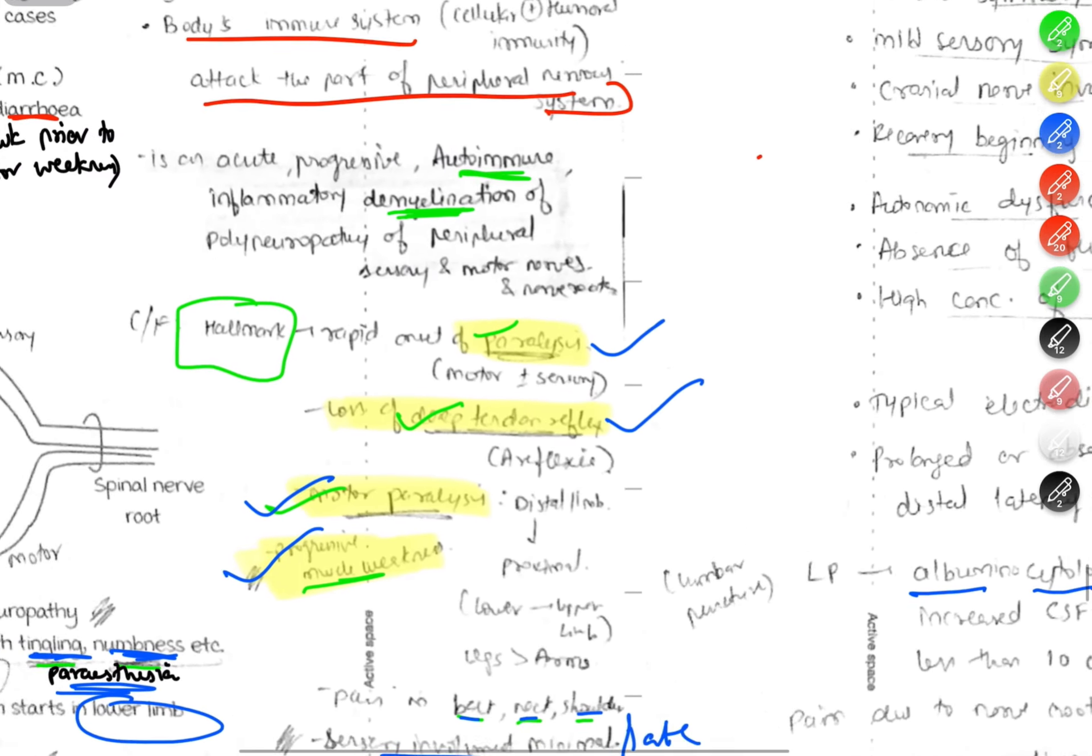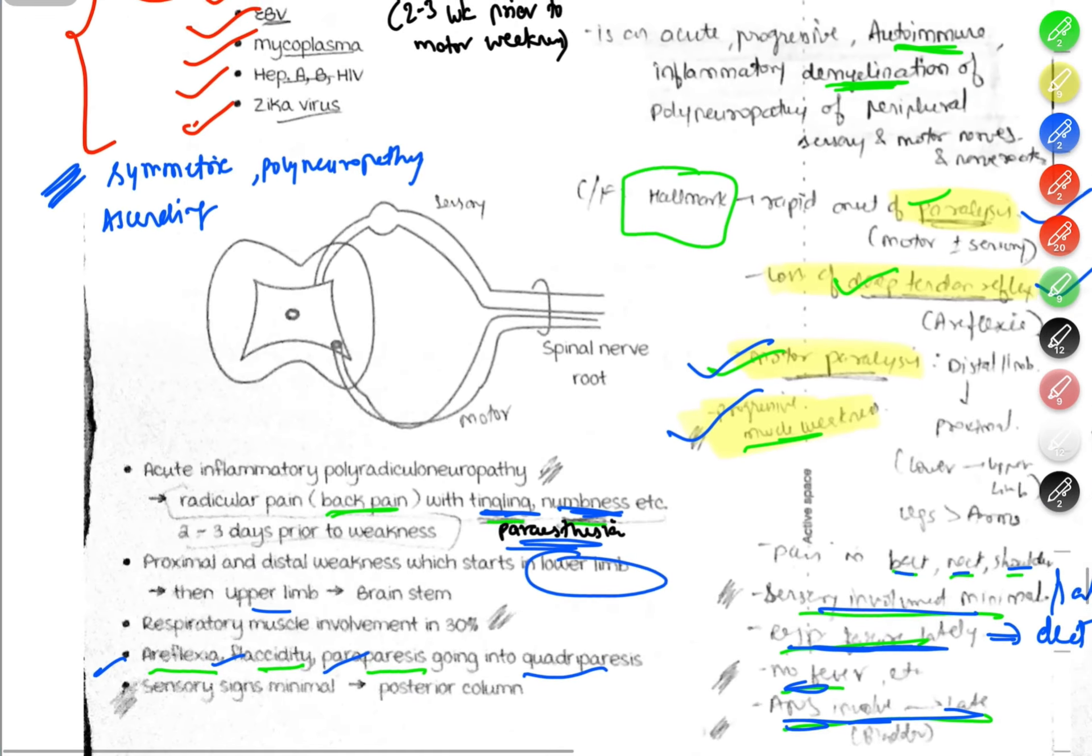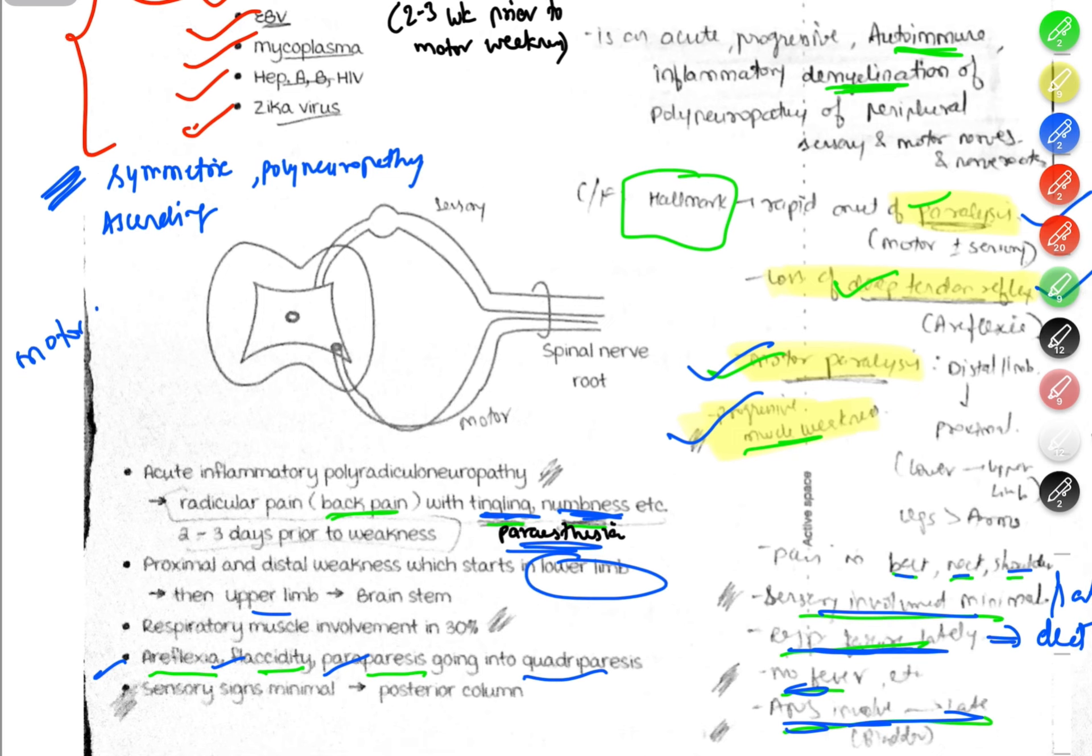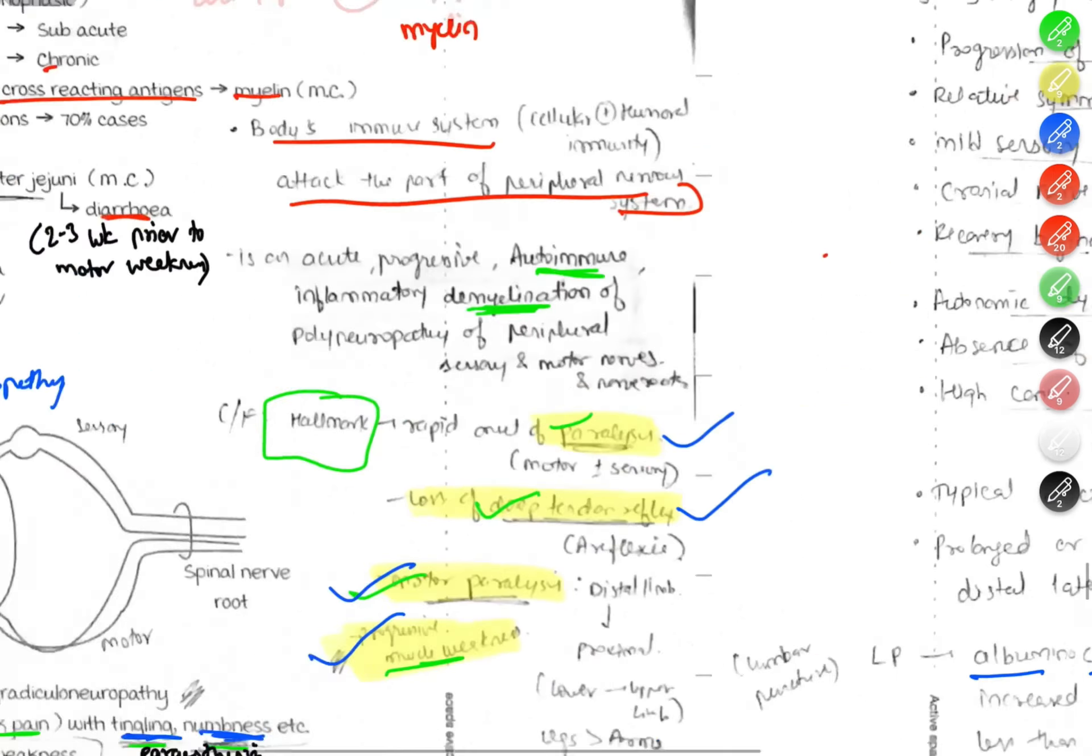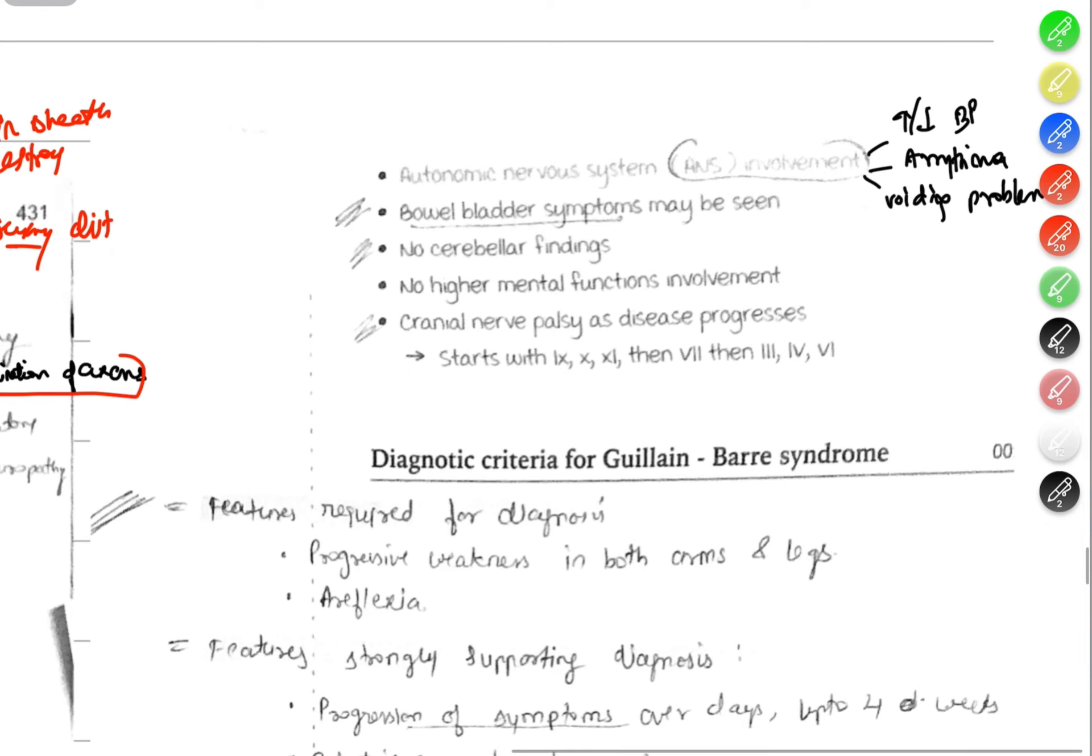Main clinical features include areflexia, flaccidity, paraparesis going into quadriparesis, motor weakness, paralysis initially in lower limbs then progressing toward upper limbs, sensory involvement late, respiratory failure, autonomic dysfunction late, autonomic nervous system involvement with blood pressure changes, arrhythmia, and voiding problems. No cerebellar findings. Cranial nerve involvement at later stages.